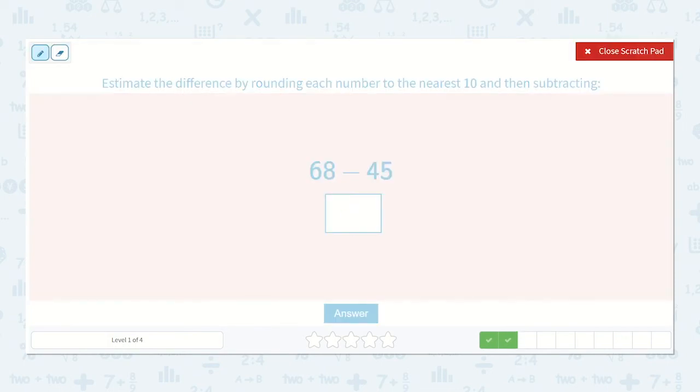Here we have 68 minus 45. Well 68 is closer to 70, so we're going to round up to 70. And 45 is closer to 50, it ends with a 5, so we know we're rounding up. So 70 minus 50. 7 minus 5 is 2, so 70 minus 50 is 20.